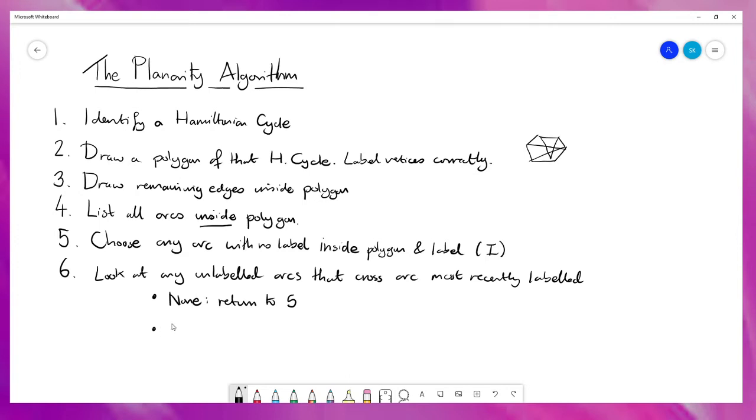If any of these edges cross each other the graph is not planar. Because there's no way to move any of these to the outside and have them not cross each other.